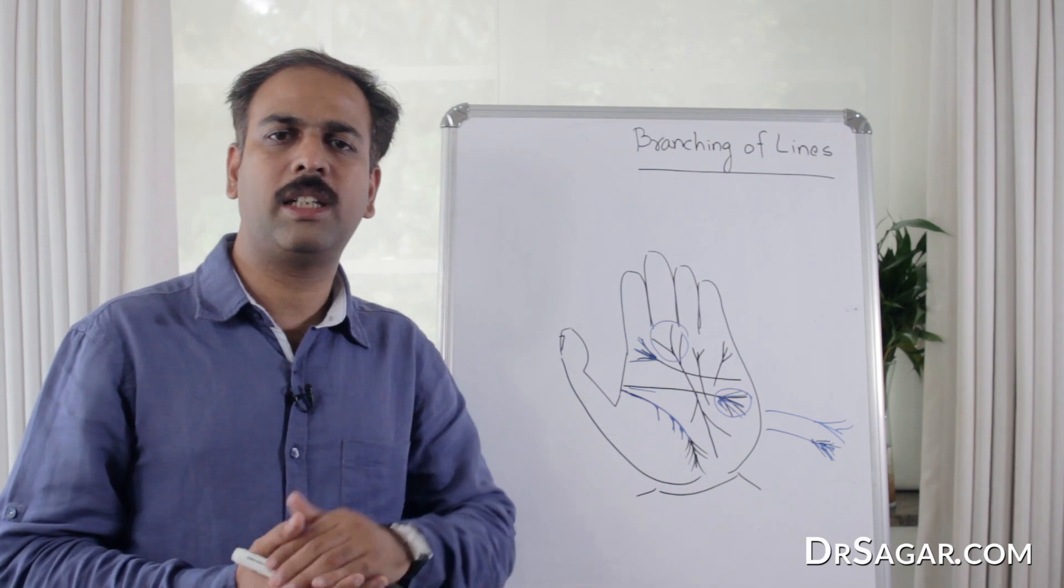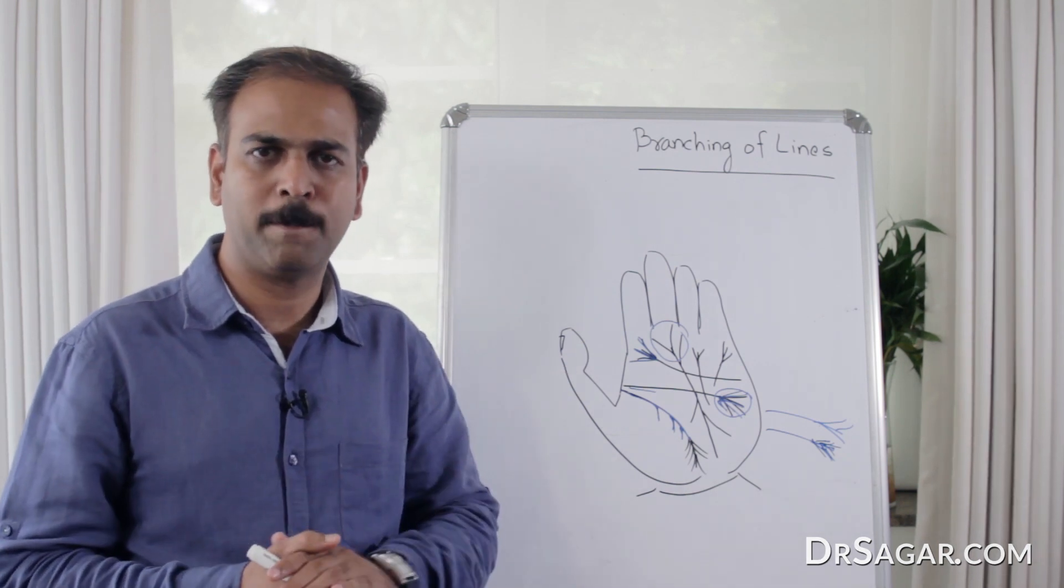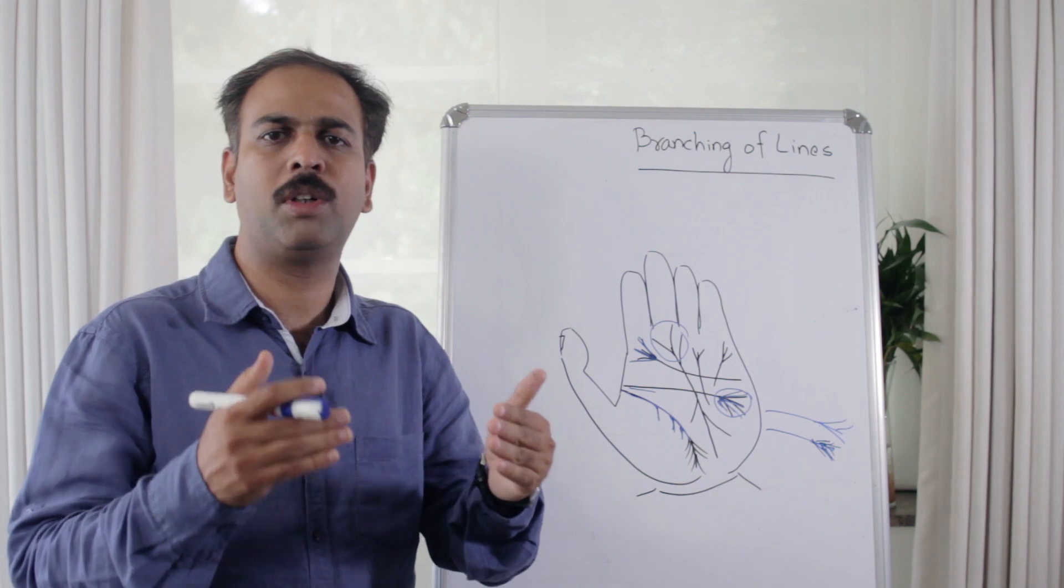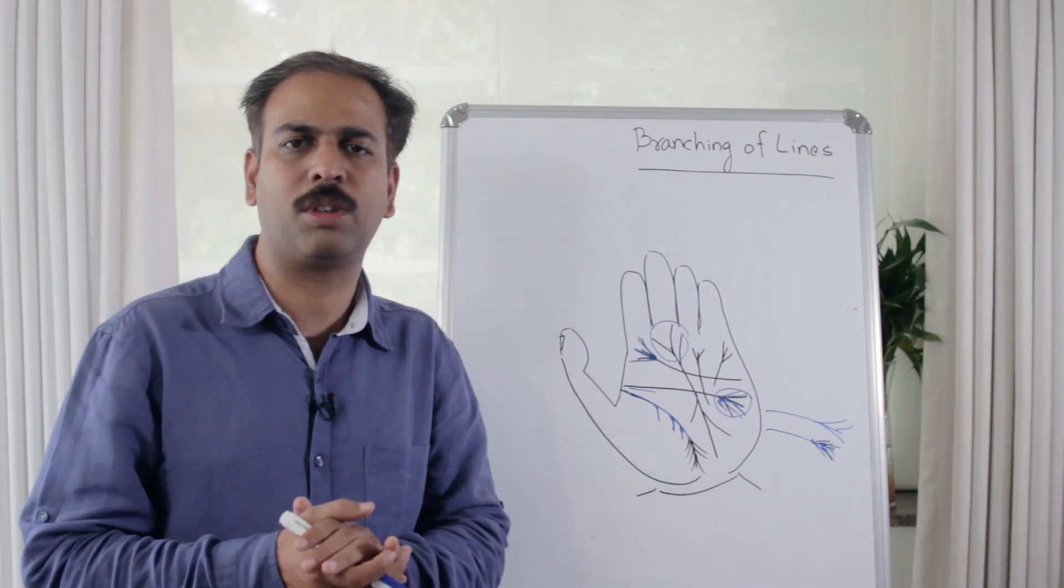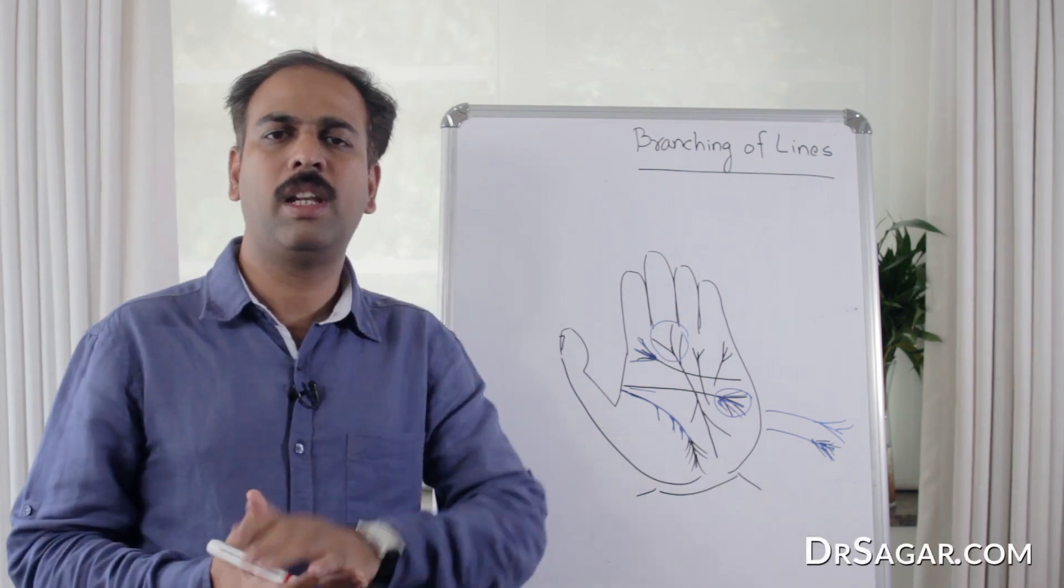If the heart line doesn't have upward branches, the person is less social and less talkative. So this is the branching of lines.